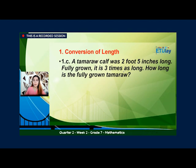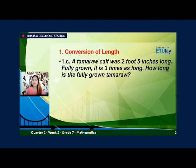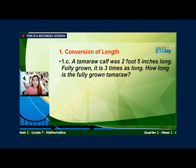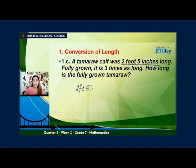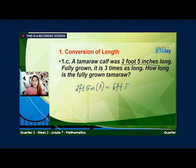How about this word problem? A tamaraw calf was 2 foot 5 inches long. Fully grown, it is 3 times as long. How long is the fully grown tamaraw? So ang tinatanong dito ay kung gaano yung haba ng isang fully grown tamaraw. All we have to do is to multiply the given, which is 2 foot 5 inches, by 3. So 2 feet times 3 is 6 feet, then 5 inches times 3 is 15 inches.